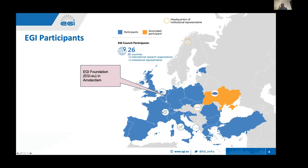In the EGI federation we have 26 participants — these are European countries, with an institution in each one. We are also engaging with international research organizations; the most well-known is CERN with the high energy physics community. We also have ECMWF for climate and ESO for scientific geography. We have associate participants like SZTAKI in Hungary, BITP in Ukraine, and ICECAT in the Nordics. The EGI Foundation is located in Amsterdam as the coordination body.